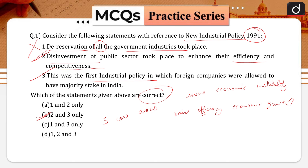Therefore, statement one is wrong because it says all the government industries were de-reserved — no, five core areas were not. Now, de-licensing: abolition of industrial licensing for all projects except a short list of industries. There are only four industries at present related to security, strategic, and environmental concerns where an industrial license is currently required.